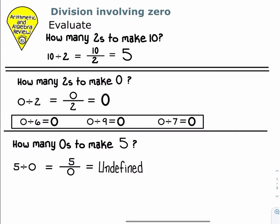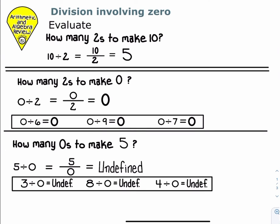Well, no matter how many nothings I give you, we are never going to get to 5. It's impossible, which is why the answer is undefined. A number divided by 0 is always undefined.